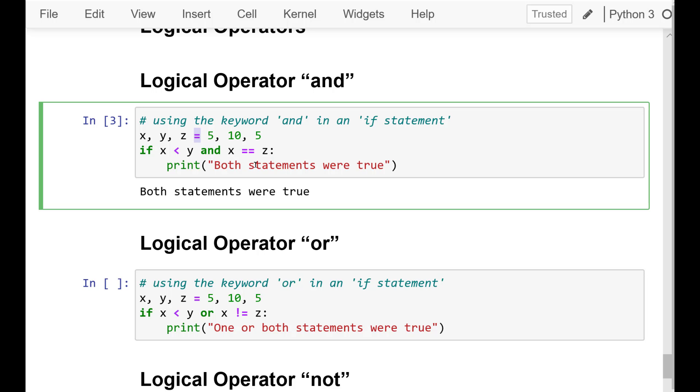So, let's try an example. Go ahead and run that cell. The output will result in both statements were true, because X is less than Y and the same value as Z.